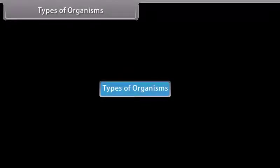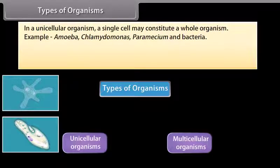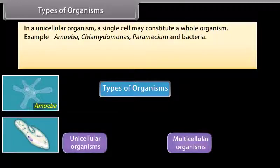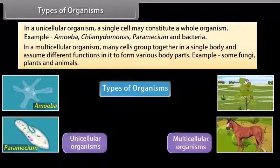Types of organisms: unicellular organisms and multicellular organisms. In unicellular organisms, a single cell may constitute a whole organism. Examples include amoeba, chlamydomonas, paramecium, and bacteria. In multicellular organisms, many cells group together in a single body and assume different functions to form various body parts. Examples include some fungi, plants, and animals.